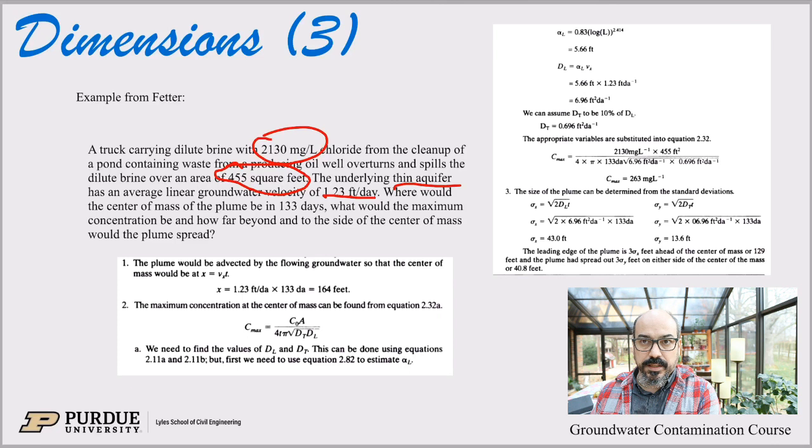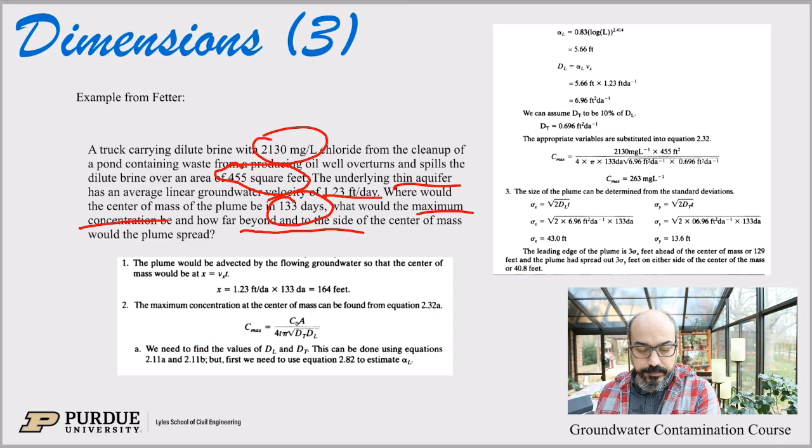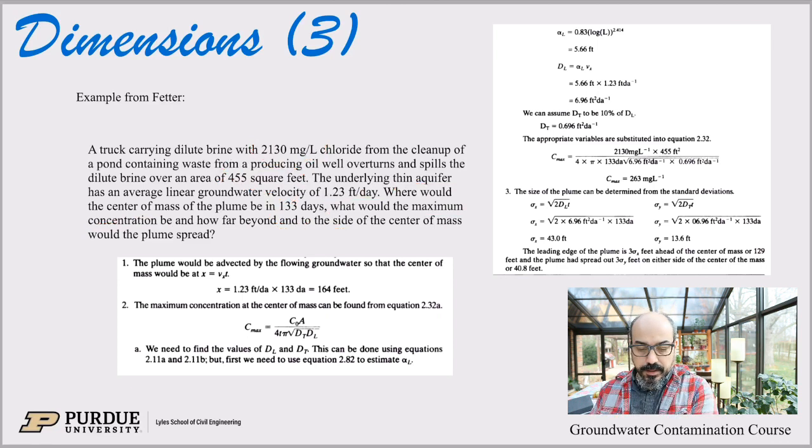We have the linear velocity, so 1.23 feet per day. 133 days later, where would the center of the pollution, the center of the plume be, and what would be the maximum concentration, and how far beyond and to the side of the center of mass would this plume spread? How big would that plume be 133 days after the crash? So quite a bit of questions and work.